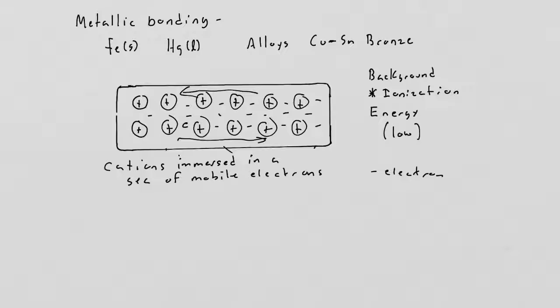The sea of mobile electrons explains a lot of the properties of a metal. The first and most important property is conductivity. You're supposed to be able to discern that you have a metal when it conducts as a solid.